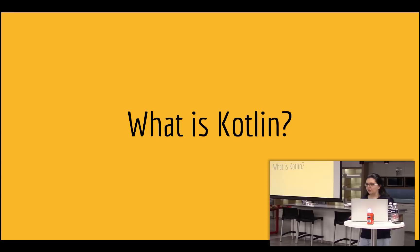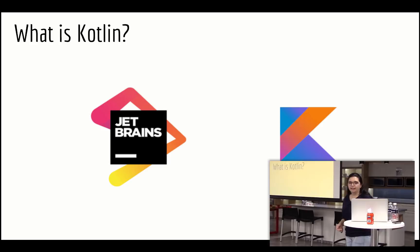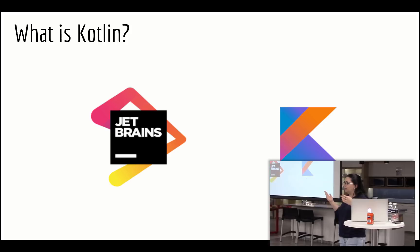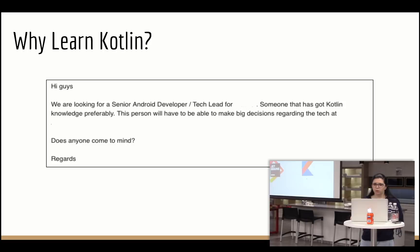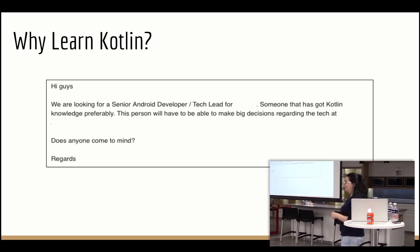My name is Rebecca Franks and you can find me on the internet at Riggeroo. I'm an Android developer by day, so I use Kotlin for Android. So what is Kotlin? Kotlin is a language developed by JetBrains, started around 2010. JetBrains makes all the cool products — IntelliJ, Android Studio, Rider, PHPStorm, basically all the tools you use. Kotlin is a statically typed programming language with some really cool features, and you can interoperate with many different platforms and languages.